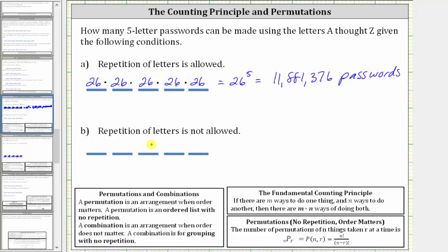For part B, repetition of letters is not allowed. When repetition is not allowed, there are still 26 ways to select the first letter, meaning the first letter can be any letter in the alphabet from A through Z. But because repetition is not allowed, there are only 25 ways to select the second letter, because one letter has already been used and cannot be used again.